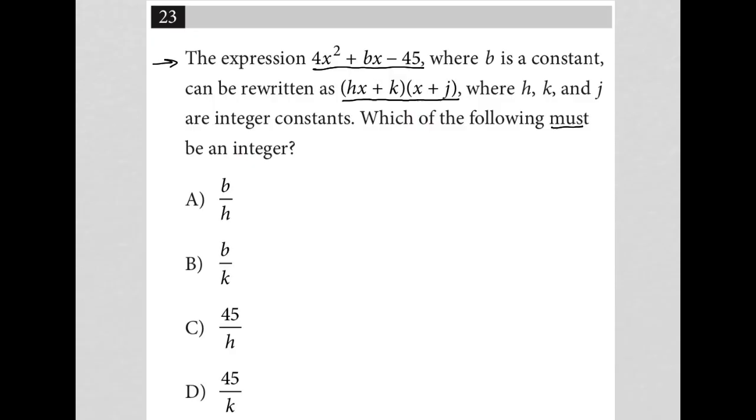Must be is very important to know. It's not could be, it's must be. So I'm going to think about how would I convert this trinomial 4x² + bx - 45 into this product of binomials, hx + k times x + j?